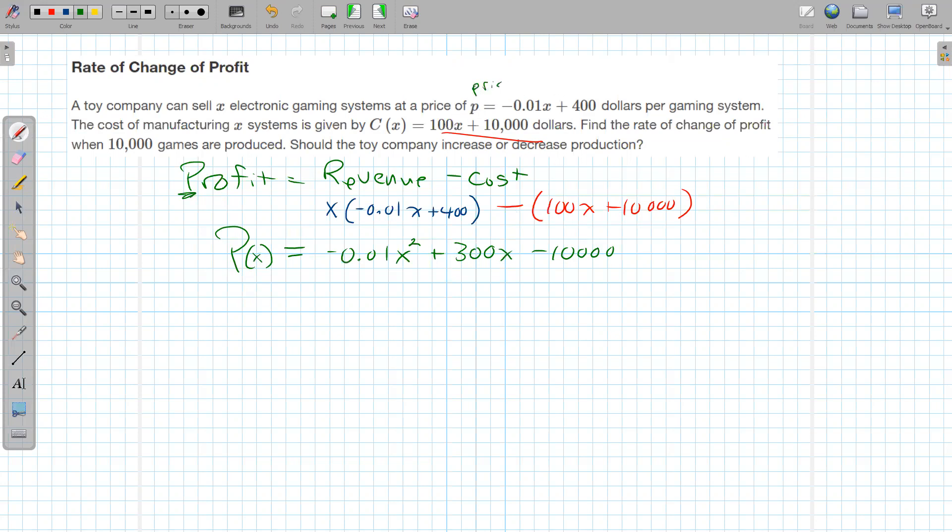So it's price up here, capital P, profit. All right, so we want to find the rate of change at ten thousand. Now normally with the rate of change we need two points. We don't have that so that means we're going to have to use our instantaneous rate of change formula.